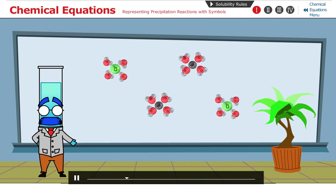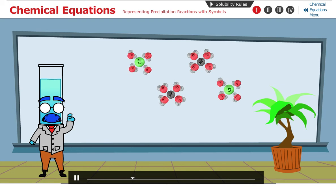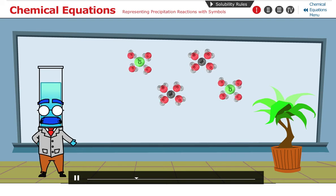We can represent an aqueous solution in two ways. One way is to write the ionic formula for each salt followed by the symbol Aq.